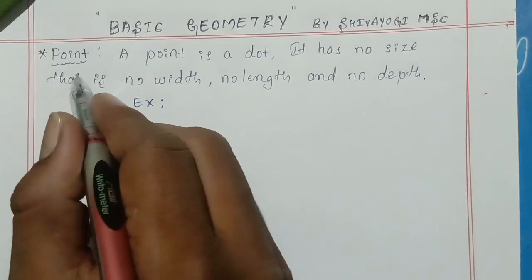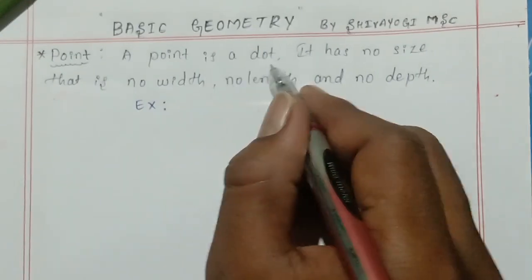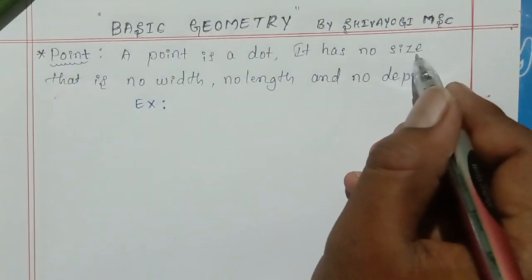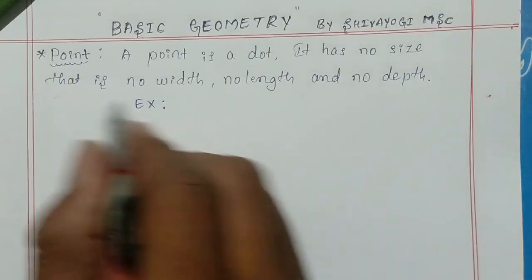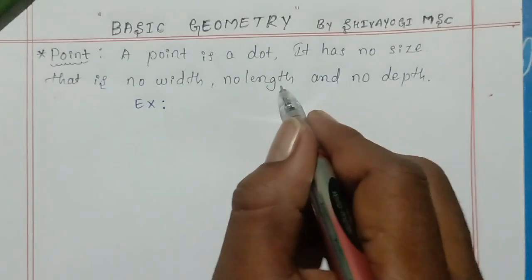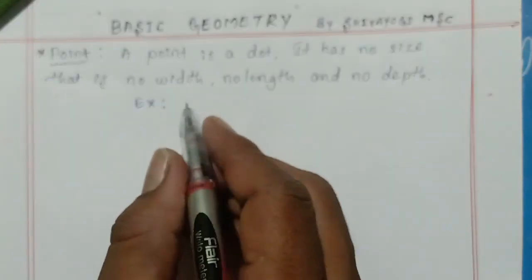The first one is point. A point is a dot. It has no size — that is no width, no length, and no depth.